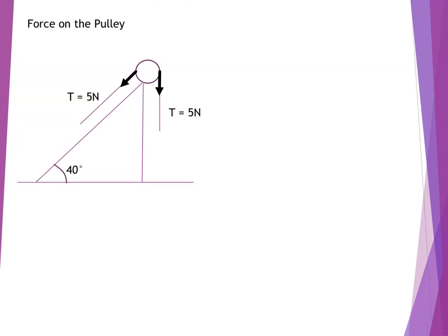We're now going to revisit the force on the pulley question. Let's imagine we've got a scenario with an inclined plane at an angle of 40 degrees. As we're dealing with inextensible strings, tension is equal in both parts of the string. So tension is pulling the pulley down the slope in one direction and down vertically in the other. What we're going to do is resolve in the horizontal and vertical directions, then use Pythagoras to find the full magnitude of the force. It's a right-angled triangle, so that angle up there is 50 degrees.